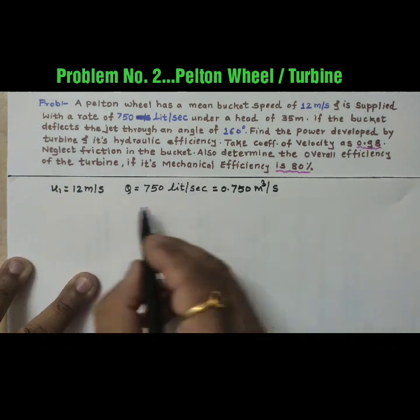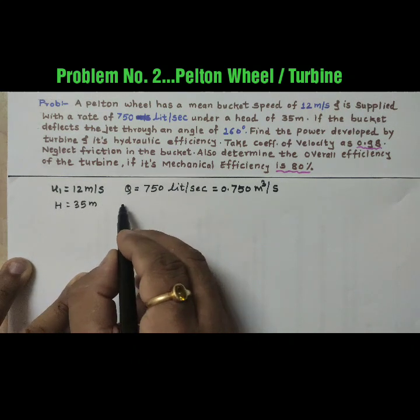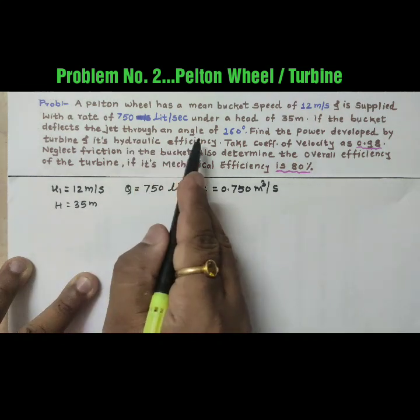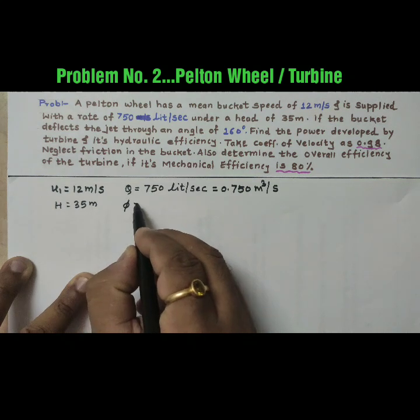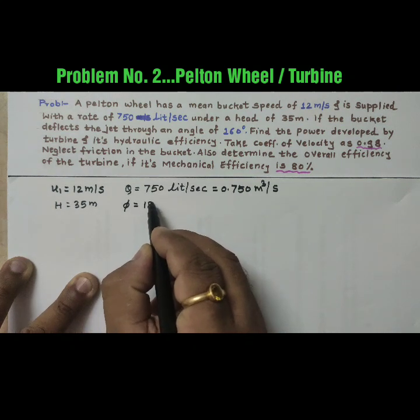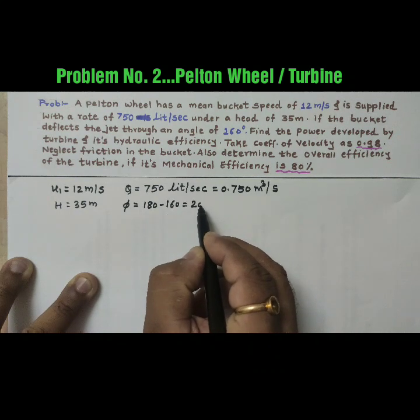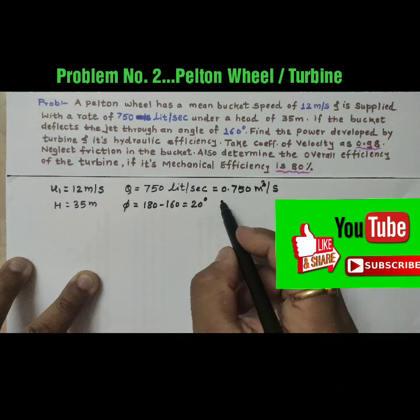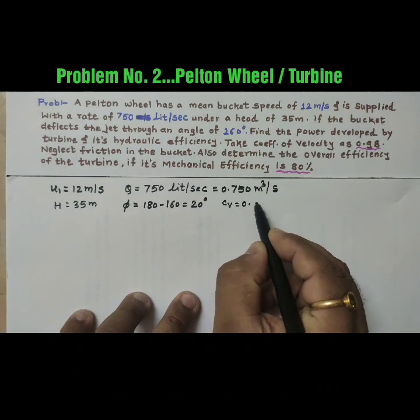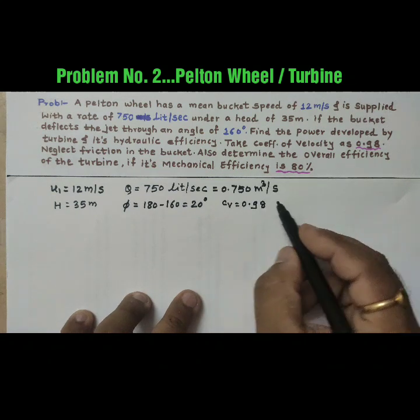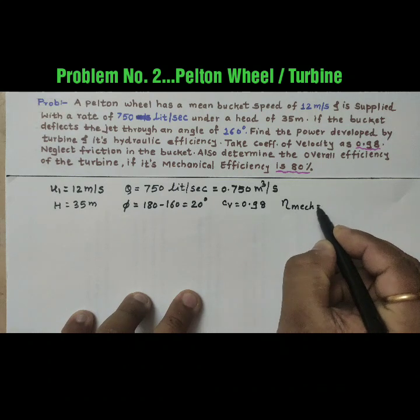Now the head is given that is 35 meter. Then angle of deflection, the deflect object through 160 degree, so phi equal to 180 minus 160, we will get the phi that is 20 degree. Then take the coefficient of velocity that is Cv 0.98, and here mechanical efficiency is 80 percent, that is 0.80.